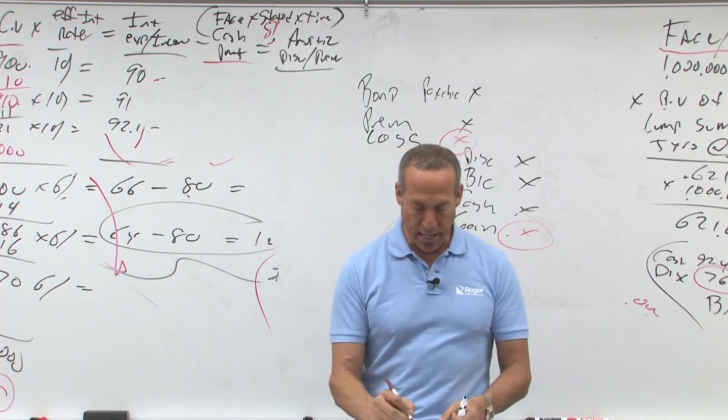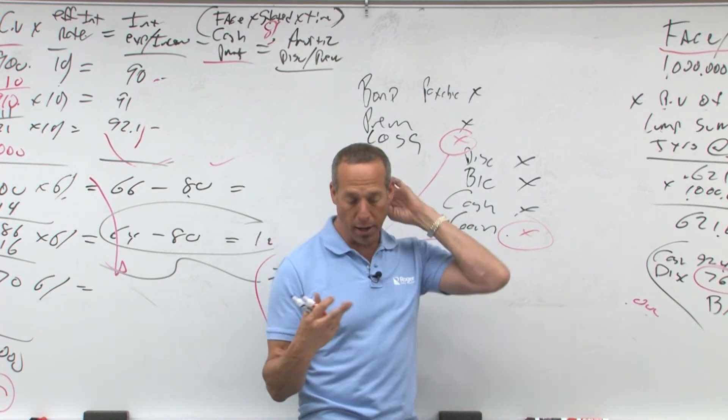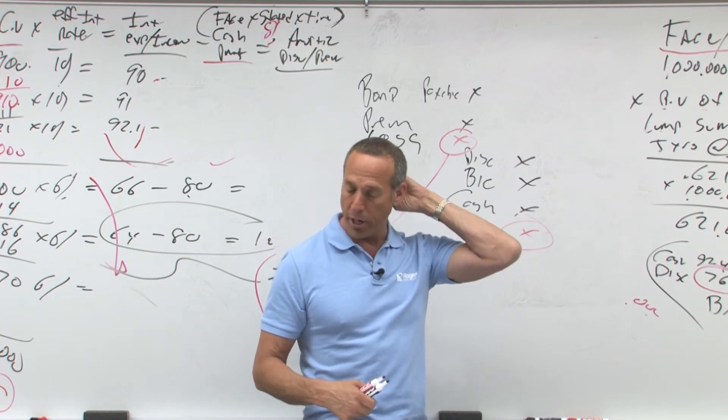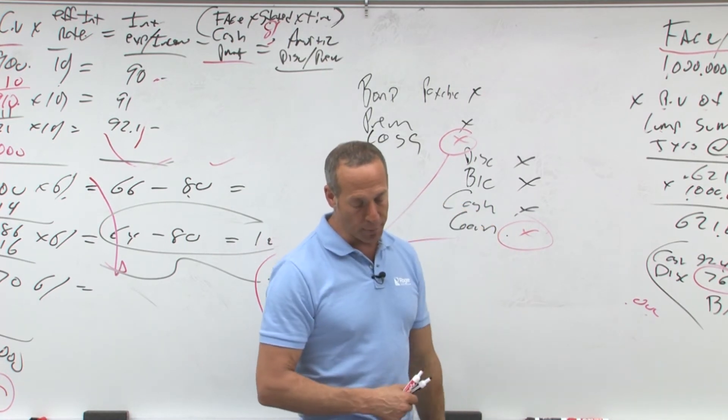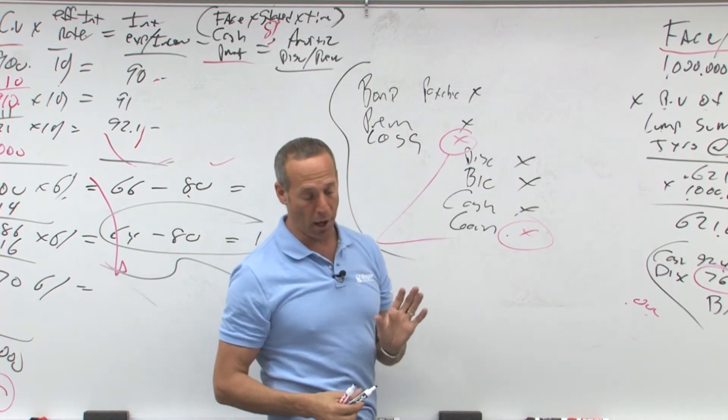Now we haven't learned this yet, you'll see this down the road, but as we are learning for example about extraordinary items, we'll learn all those details. So again it could be ordinary or extraordinary as far as the bond retirement, all right? But again, just remember, do the opposite journal entry of when you issued the bonds.